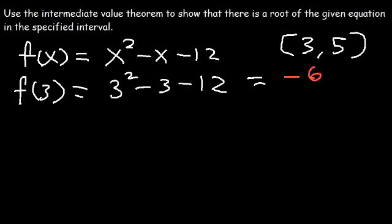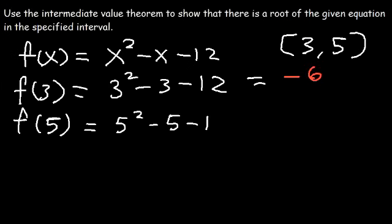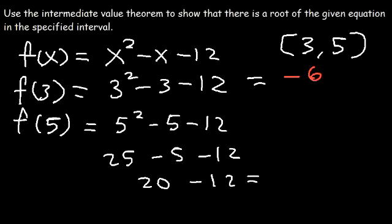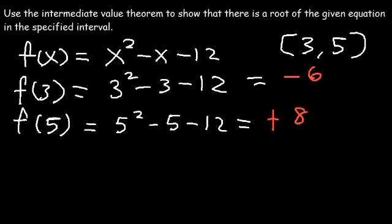Otherwise, we can't use the intermediate value theorem. Now let's find f(5). That's going to be 5 squared minus 5 minus 12. 5 squared is 25. 25 minus 5 is 20, and 20 minus 12 is positive 8. So we can see that one of them is positive and the other is negative. Therefore, somewhere between f(3) and f(5), the y value has to cross 0.